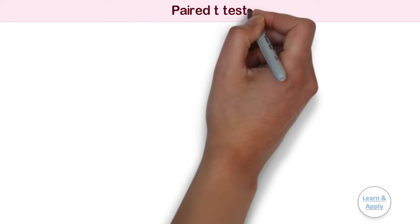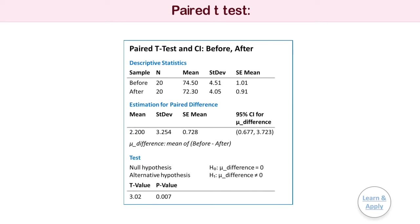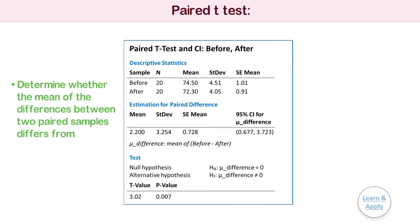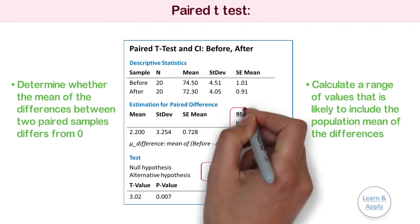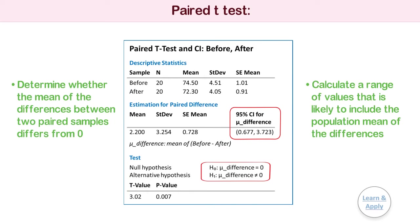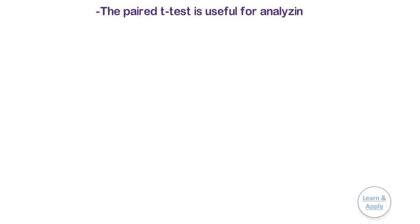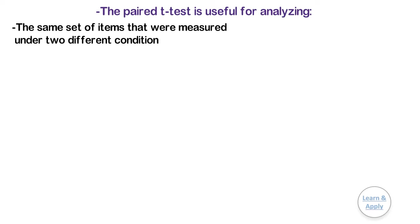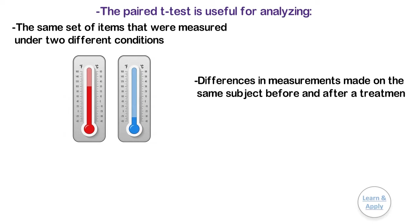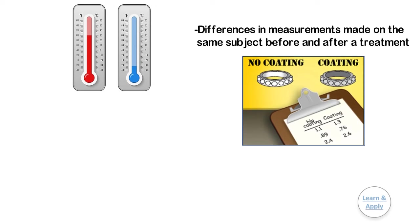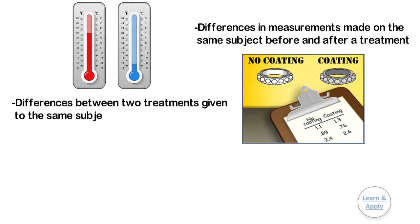The paired t-test is used to determine whether the mean of the differences between two paired samples differs from zero or a target value, and to calculate a range of values that is likely to include the population mean of differences. The paired t-test is useful for analyzing the same set of items that were measured under two different conditions, or differences in measurements made on the same subject before and after a treatment, or differences between two treatments given to the same subject.